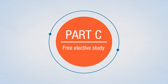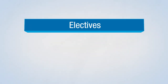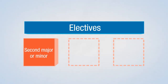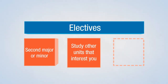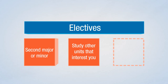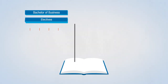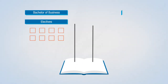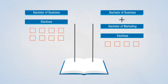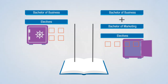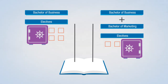Part C: Free Elective Study. The last section of your course is space to choose electives. Electives can be used to do a second major or minor from business or another faculty, study other units that interest you or add to your major, or do a type of study abroad or an industry placement. Check your course on the handbook to see how many electives you can choose. Double degrees generally have other requirements instead. It's a good idea to save some electives until you decide what you want to do with this part of your course.